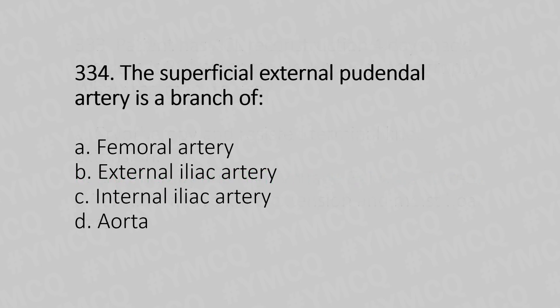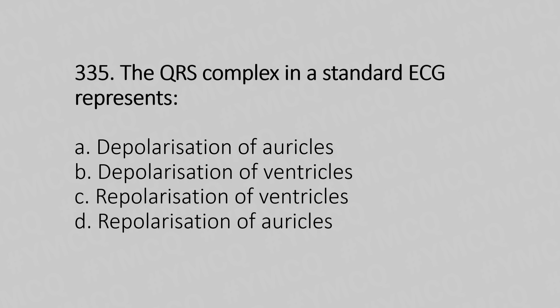Question number 334: The superficial epigastric artery is a branch of — option A: femoral artery. Option B: external iliac artery. Option C: internal iliac artery. Option D: aorta. The answer is option A, femoral artery.